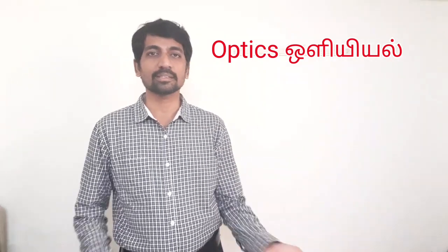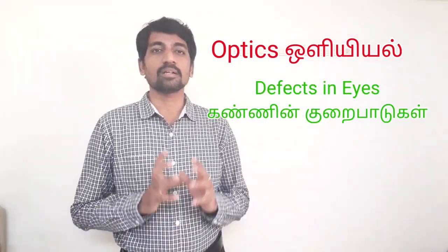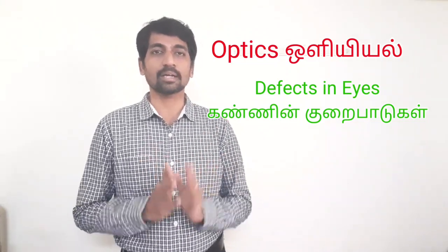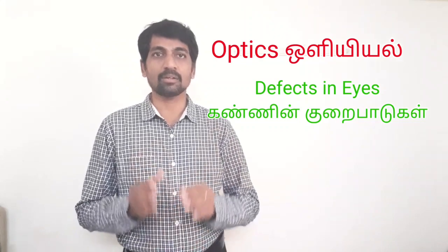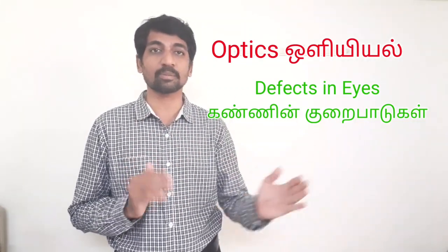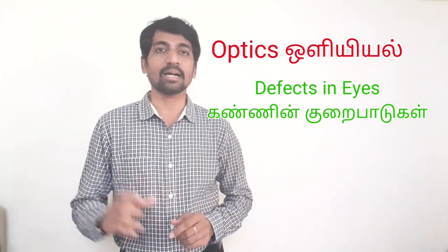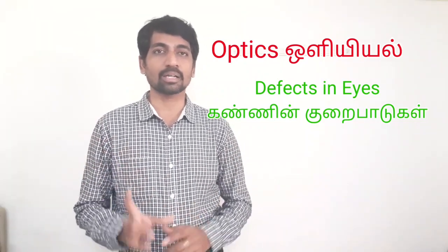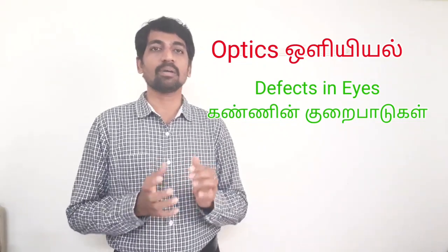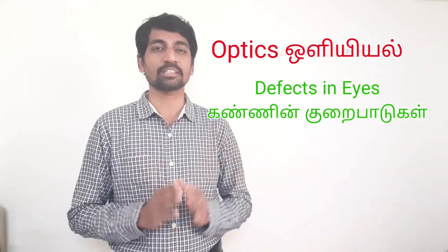Hi students, this is Alex. In this video we discuss defects in the eye. For a normal human eye, objects at 25 centimeters distance or at infinite distance are clear. The eye adjusts its focal length and power of accommodation. However, due to aging or some other problem, the eye can lose its power of accommodation.